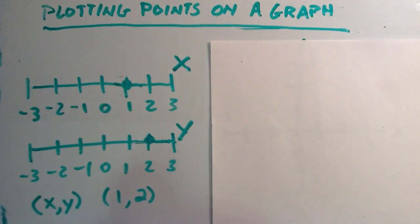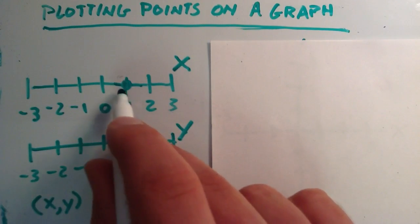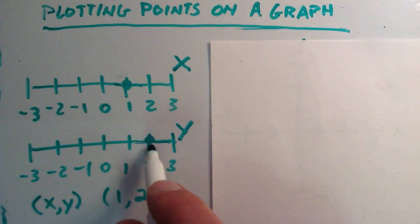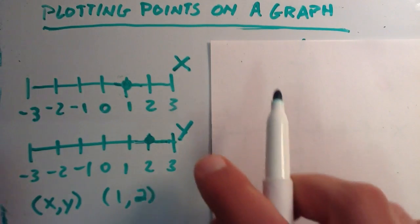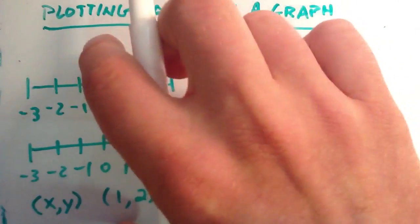So if you were just to plot this point on its individual number lines, you would get two separate points, one on the x axis or the x number line, and the other one on the y axis or the y number line. So to show this point graphically, we pretty much take the y axis and we flip it 90 degrees so that it's vertical.